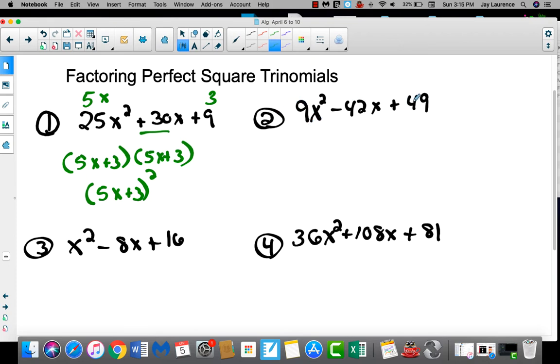Let's check and see if number two is a perfect square trinomial. 9x squared, square root is 3x. Square root of 49 is 7. Multiply, get 21. Doubled, 42. Sure is. I'm going to get a 3x minus 7 quantity squared. Bam, it's done.